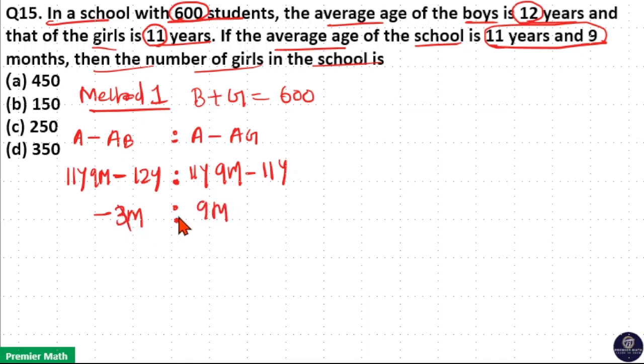Now, 3 goes 3 times in 9. So, minus 1 is to 3. Then, number of boys is to girls. Take the reverse of this. This is equal to minus 1 to 3. So, take the reverse of this. That is 3 is to 1. Ignore the negative symbol.